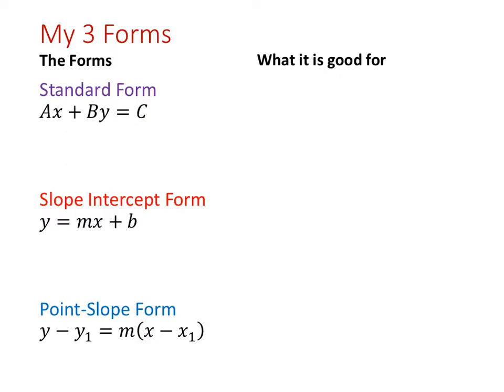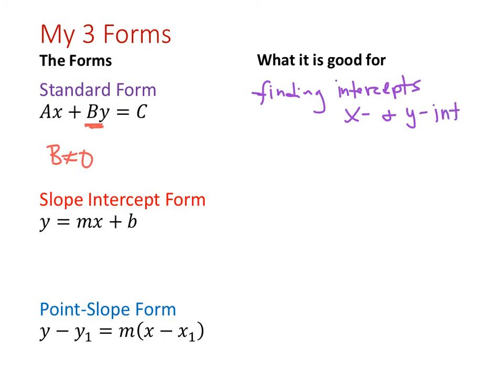A linear function has three different forms. The first is standard form, noted as ax plus by equaling c, where b does not equal zero — because eliminating y defeats the purpose of a function. The purpose of standard form is finding intercepts: both x and y intercepts. It's also really good at showing the relationship between x and y and how they're interacting with each other.